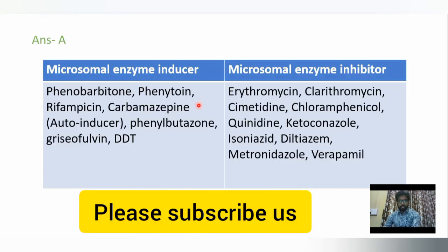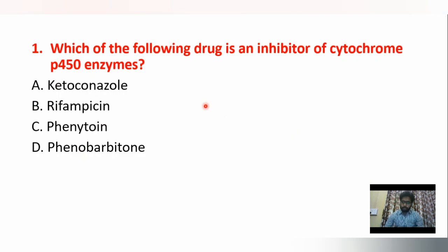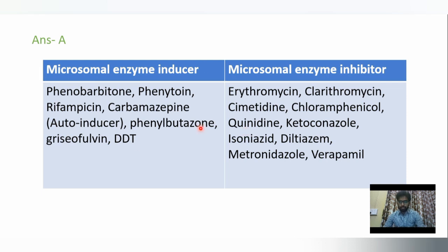The microsomal enzyme inducers are phenobarbitone, phenytoin, rifampicin, carbamazepine, phenylbutazone, griseofulvin, and DDT. Whereas microsomal enzyme inhibitors are erythromycin, clarithromycin, cimetidine, chloramphenicol, quinidine, isoniazid, diltiazem, metronidazole, and verapamil. This is a very important question from general pharmacology. You have to remember which drugs come under the list of microsomal enzyme inducer or microsomal enzyme inhibitor.